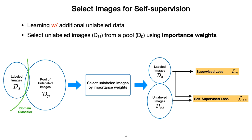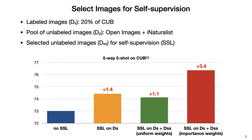Now consider we have a pool of unlabeled images. We train a domain classifier between labeled and unlabeled images, then use the importance weight to select unlabeled images for self-supervision. Comparing to the baseline of no additional data, selecting unlabeled images using uniform weights hurts the performance as shown in green, while selecting using importance weights gives further improvements as shown in red.